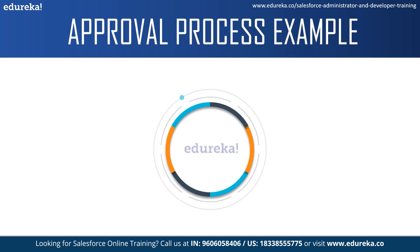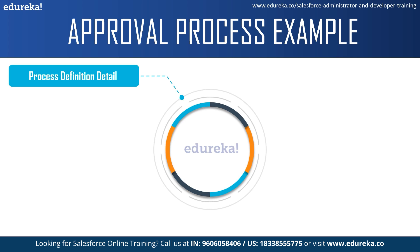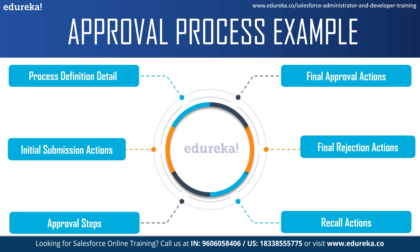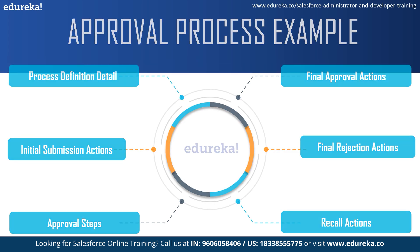Let's look at the approval process sections in more detail. First, you have the process definition details — your approval process header level details like names, emails, and templates. Second, the initial submission action is executed when the user clicks 'Submit for Approval' on the object record. Third, approval steps contain the details of criteria and approvers. Fourth, final approval actions are executed after all approval steps have been approved. Fifth, the final rejection action executes if a step is rejected, and the recall action executes if a step is recalled.